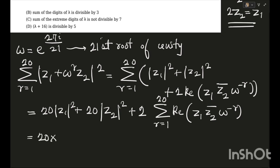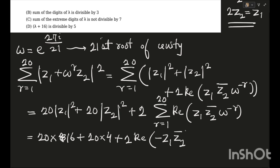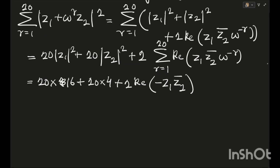Now mod z1 = 4 so |z1|² = 16, and |z2|² = 4. So we get 20×16 + 20×4, which is 320 + 80 = 400, plus 2 times the real part of z1·z2_conjugate times sigma r=1 to 20 of ω^(−r). The key point is that only ω^(−r) depends on r, so sigma r=1 to 20 of ω^(−r) equals −1.